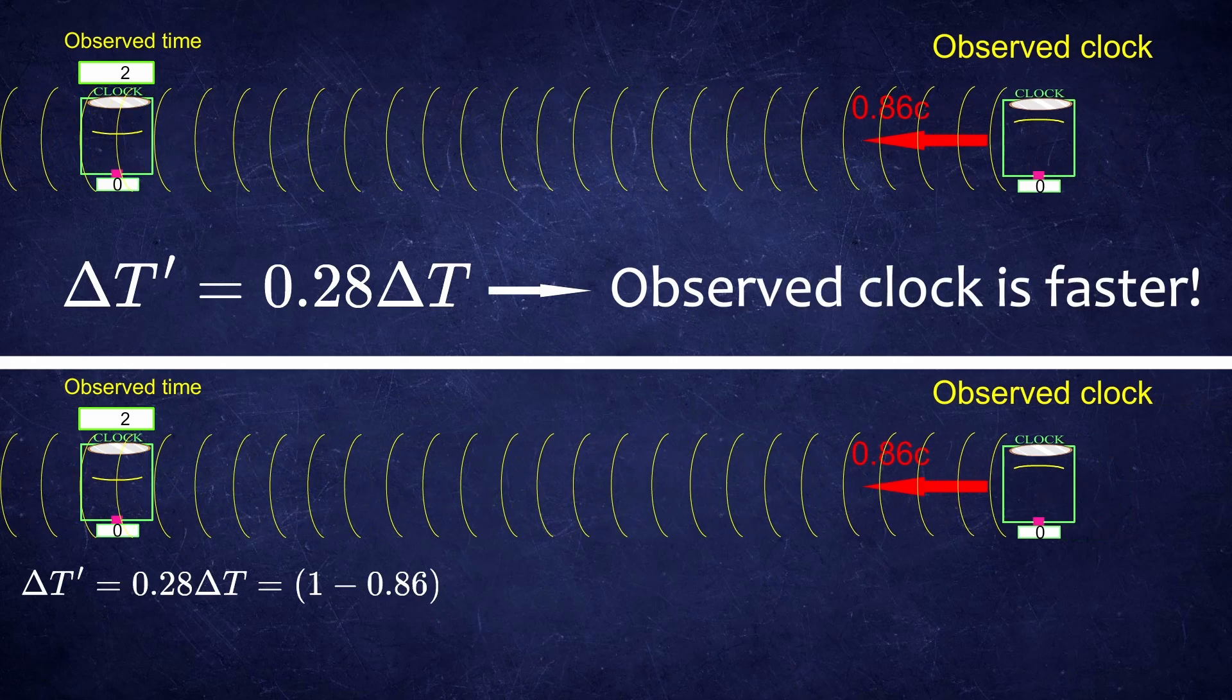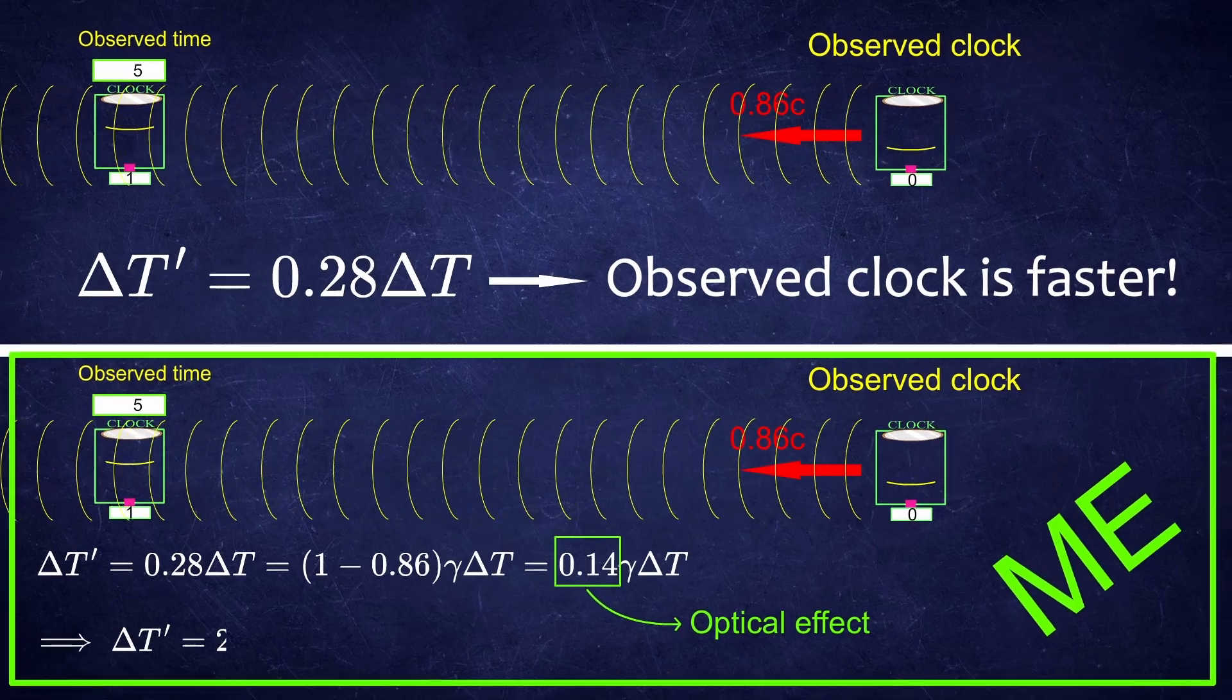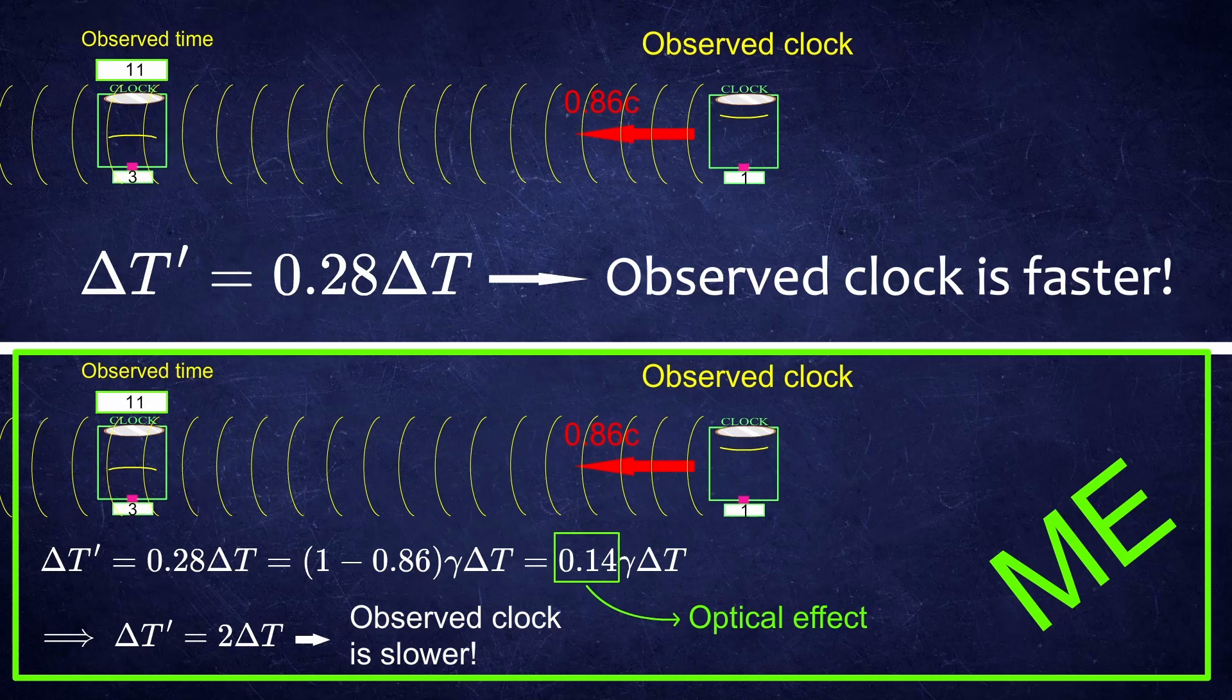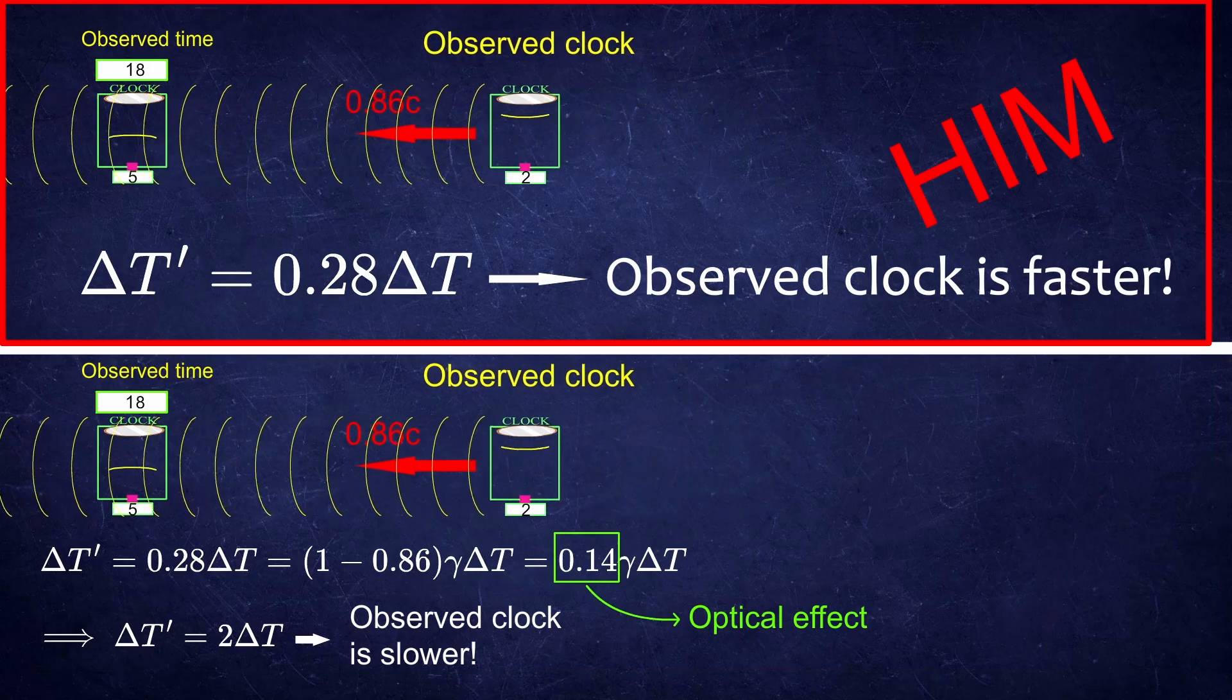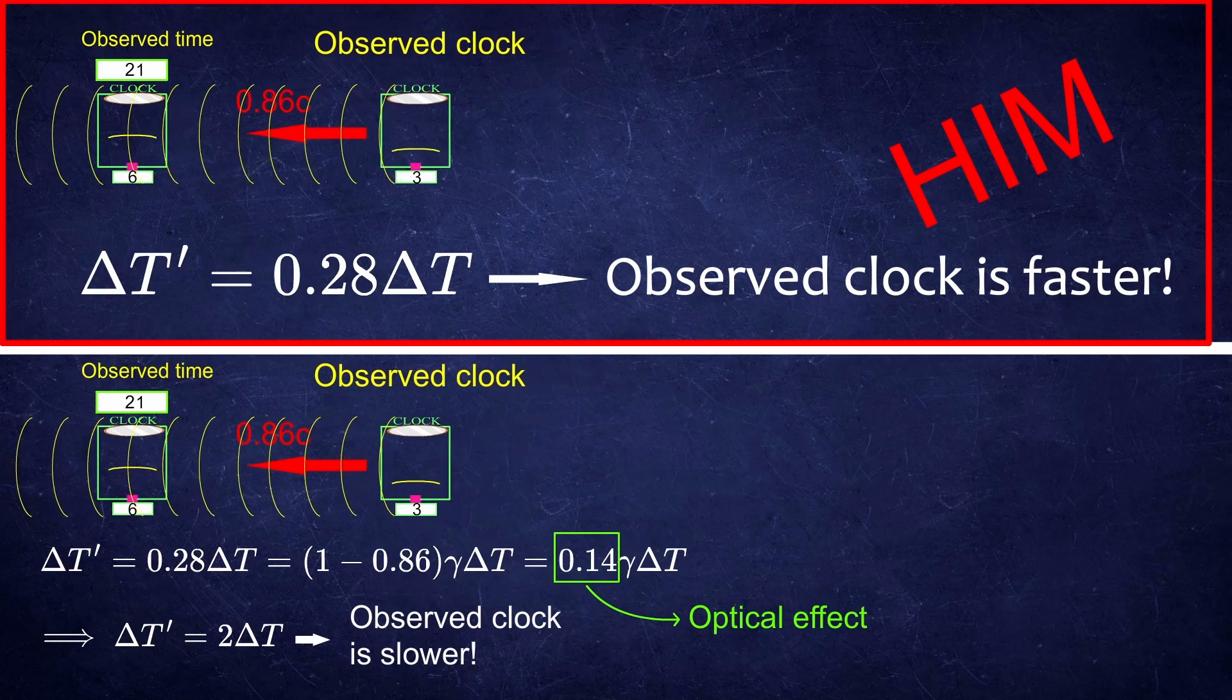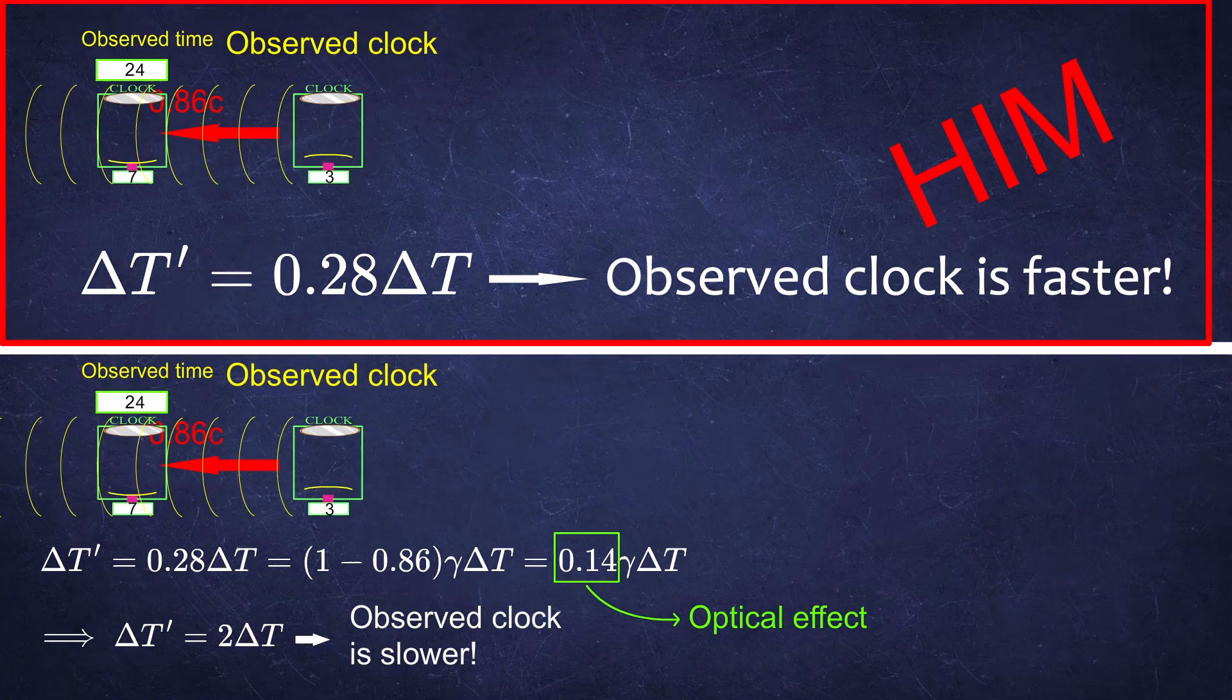And only very late in the discussion, when both of us were quite frustrated already, I actually realized that we don't even agree on what we are talking about. Whereas I was talking about what an observer can figure out based on the data he has. The other guy was actually talking about what an observer would see with his own eyes, given certain scenario.